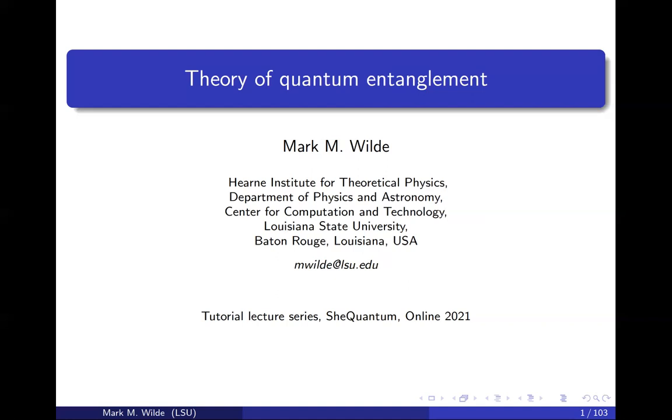Then I'll talk about the Bell experiment, which is one of the most important experiments in entanglement theory. Then we'll talk about some mathematical tests you can do to try to decide if a state is entangled or not. And then we'll wrap it up with methods for quantifying entanglement. There's two approaches here. One is called the operational approach. The other is called the axiomatic approach.